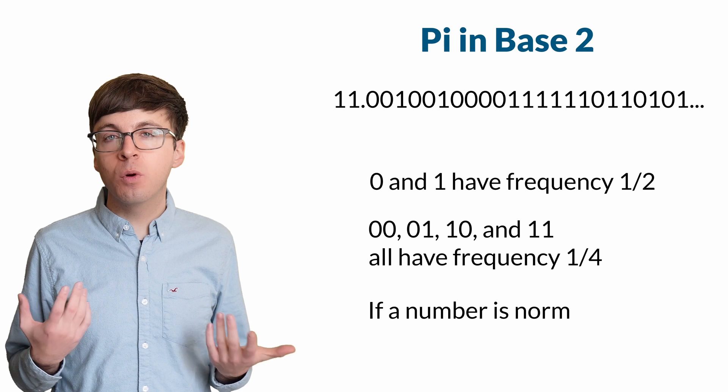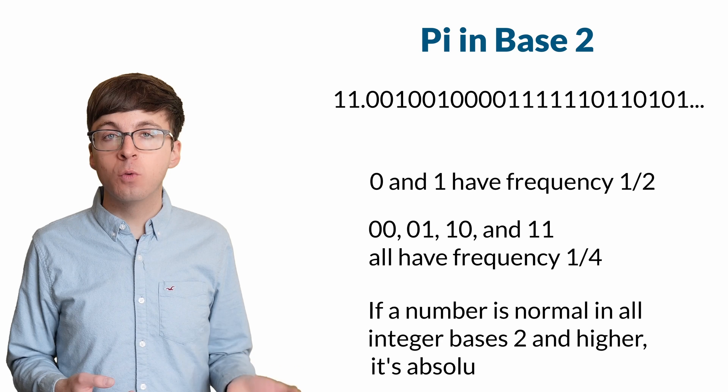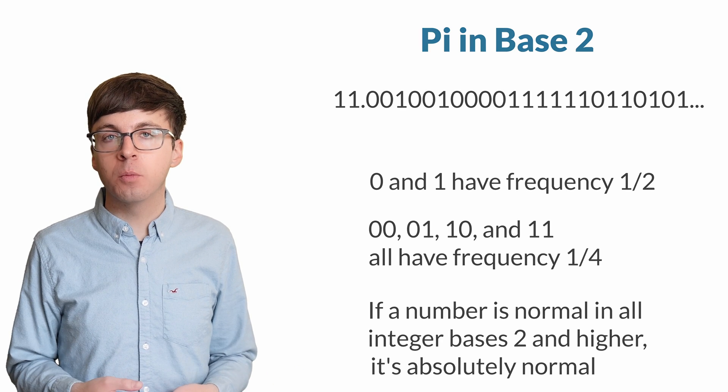If a number is normal in all integer bases greater than or equal to 2, then we say that that number is normal, or absolutely normal.